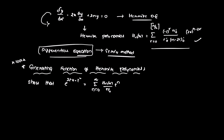Recall that n factorial equals n times (n minus 1) times (n minus 2) and so on down to 3, 2, 1. For example, 4 factorial equals 4 times 3 times 2 times 1, which is 24.